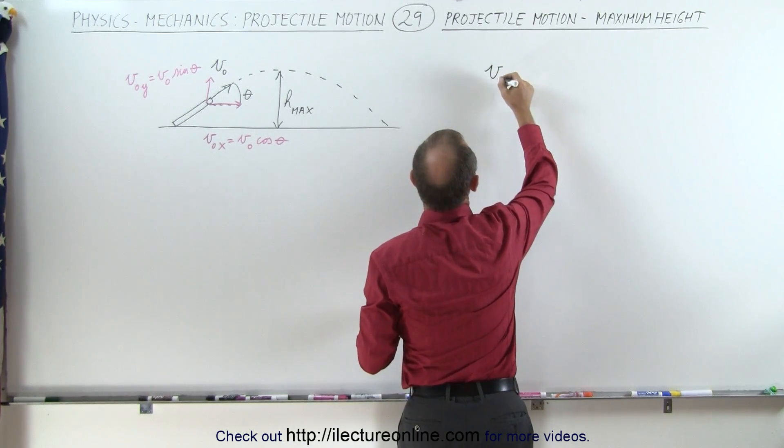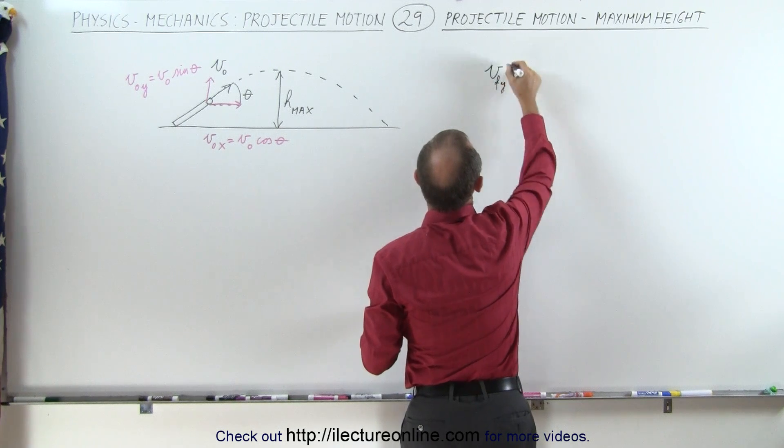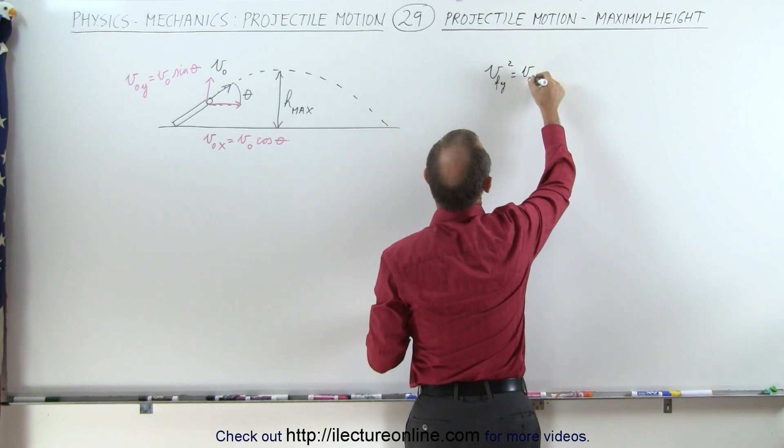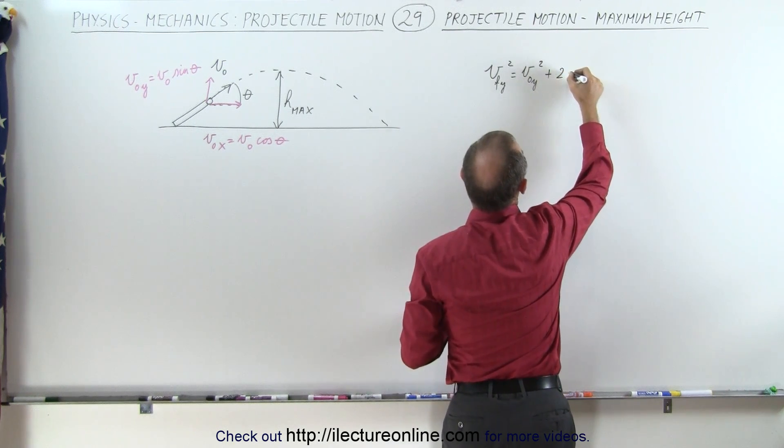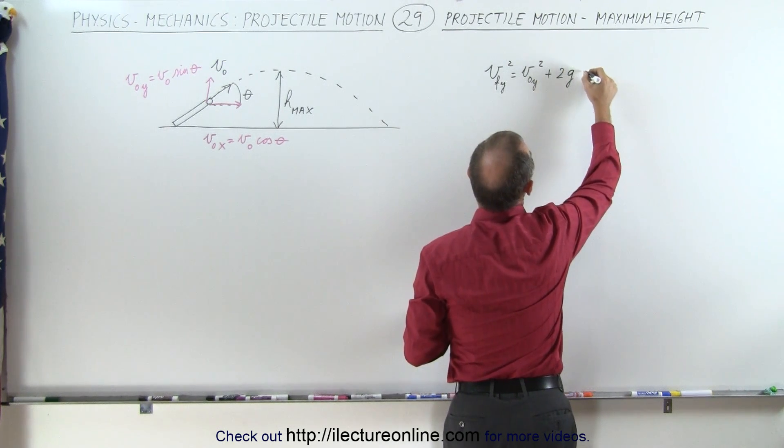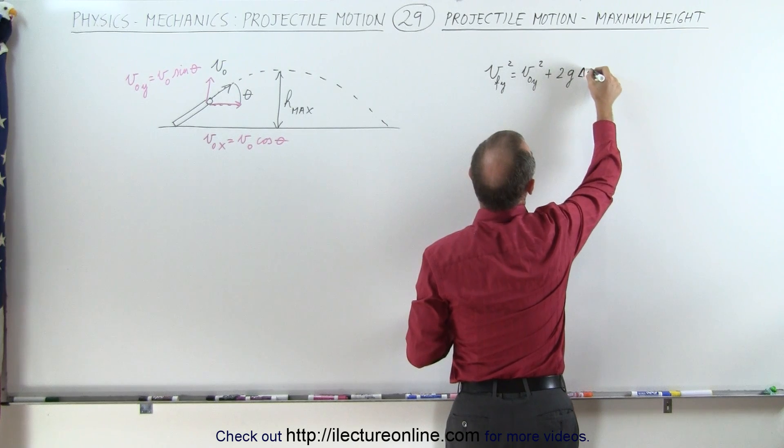That v final in the y-direction squared equals v initial in the y-direction squared plus 2 times g times the change in the height, delta y.